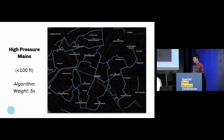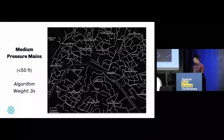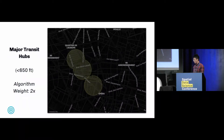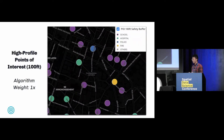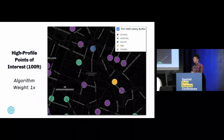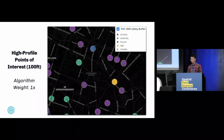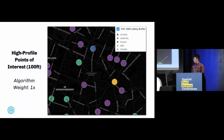We loaded the high-pressure mains, the medium-pressure mains, major transit hubs, the top 10% of most densely populated census block groups, as well as the high points of interest. Any decision maker looking at all of these layers on a map is going to be overwhelmed by the tremendous amount of visual information. So how do we resolve this?